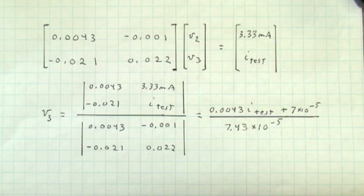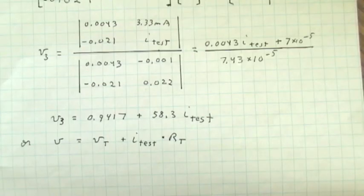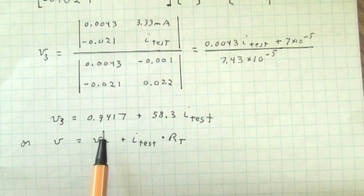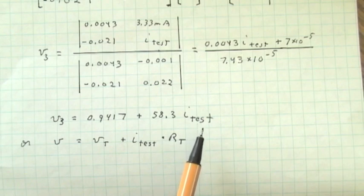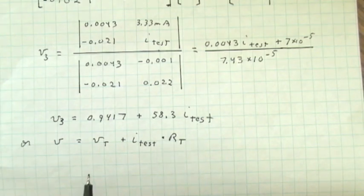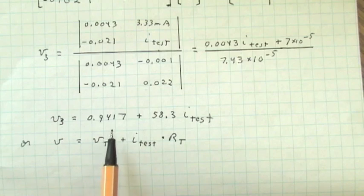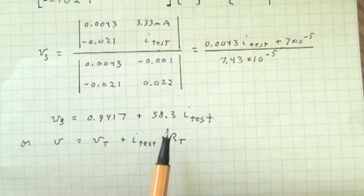It remains only to carry out those calculations, which yields the following. V sub three, the node voltage at node three is 0.9417 V plus 58.3 times the test current. From that we deduce that the Thevenin voltage is in fact 0.9417 V and rounding off 58.3 is the Thevenin resistance.